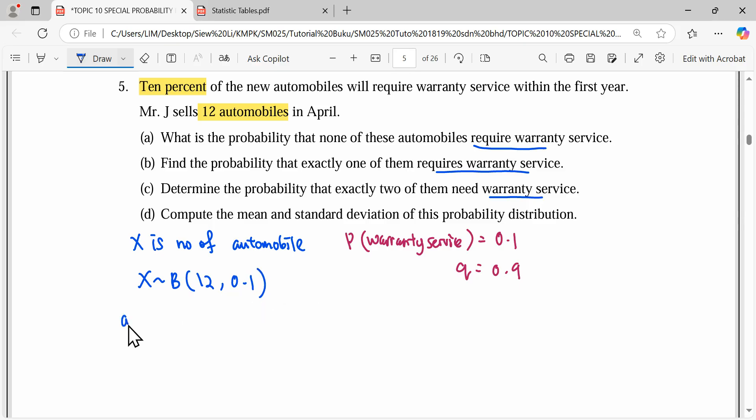For question A, what's the probability that none of them need service? So the number of automobiles is none, means 0. To get P(X=0), we use the binomial formula: P(X=r) equals nCr times p power r times q power n minus r.